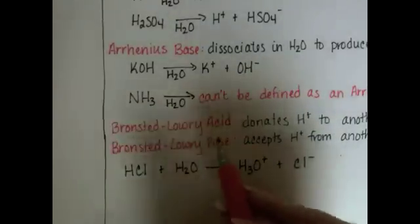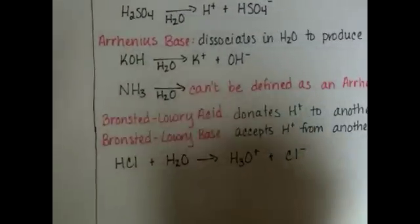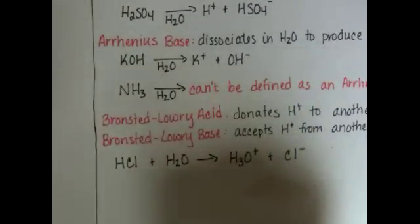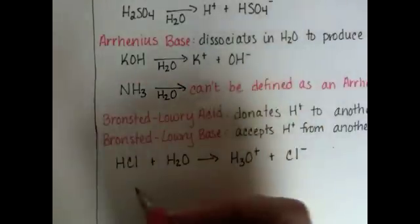If we use the Bronsted-Lowry method, we can see why it's an acid. The way that you characterize something according to the Bronsted-Lowry method is you look at what happens to the molecule over the course of the reaction.